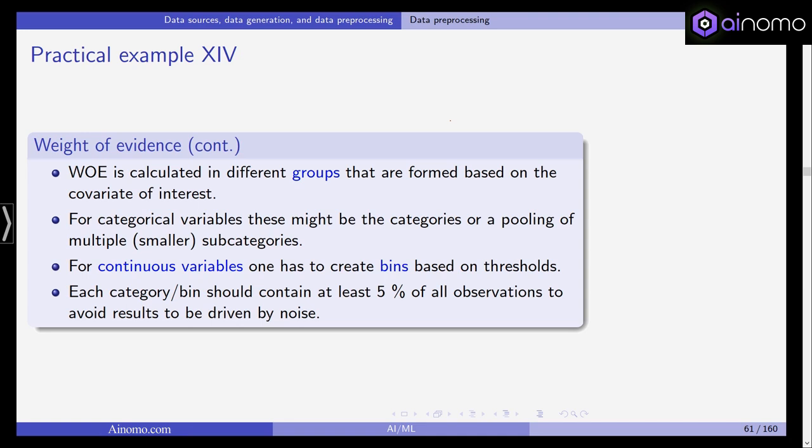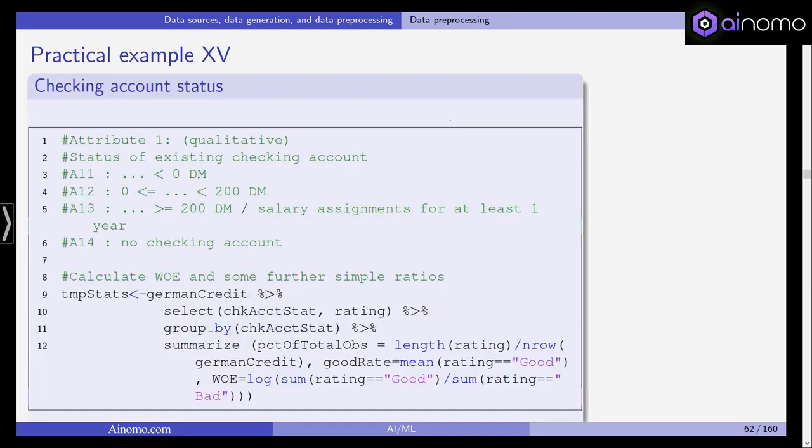For continuous variables, most definitely one has to create bins based on thresholds. For example, you could say income from zero to 40,000 euros, 40,000 to 80,000 euros, and everyone who has an income higher than 80,000 euros per year. Each category or bin should contain at least five percent of observations to avoid the results being driven by noise.